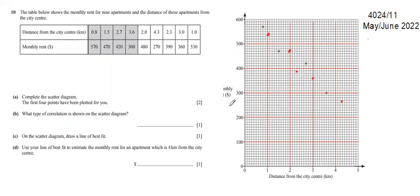What type of correlation is shown on the scatter diagram? Actually it is going down as the distance increases from the city center - the rent is getting down. So it is a negative correlation. So we say it is a negative correlation.